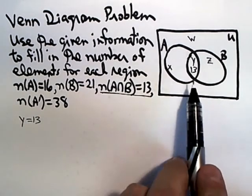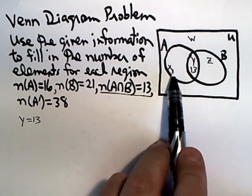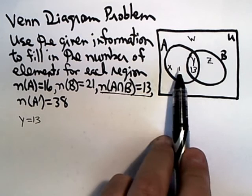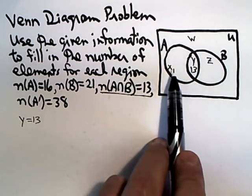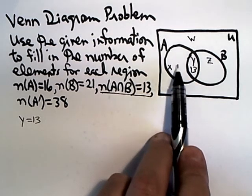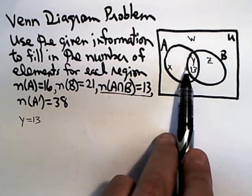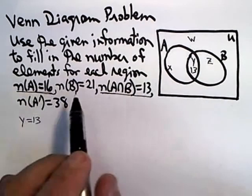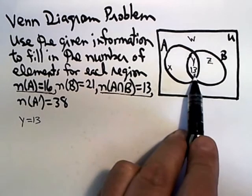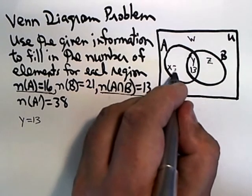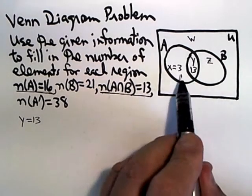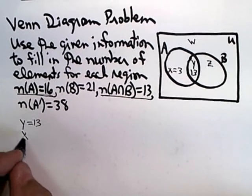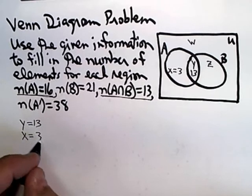Now you work your way out. We know Y, but we don't know X or Z. Well, Y is part of A, and if you take A in totality, X plus Y gives you all of A. Since the number of elements in the entire circle A is 16 and you already have 13 of them here, that tells you that X must be 3, because 3 plus 13 gives you the 16 elements that are there. So X equals 3.